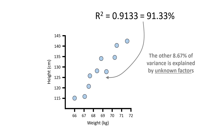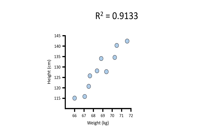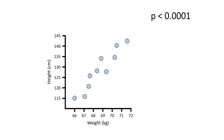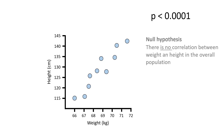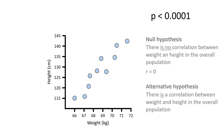For example, measurement errors. Now the third main output from a Pearson correlation test is obviously the p-value. Usually when performing the test, a two-tailed analysis is performed. In this case, the null hypothesis is there is no correlation between weight and height in the overall population — in other words, the correlation coefficient value is equal to 0. And the alternative hypothesis is that there is a correlation between weight and height in the overall population, so the correlation coefficient does not equal 0.